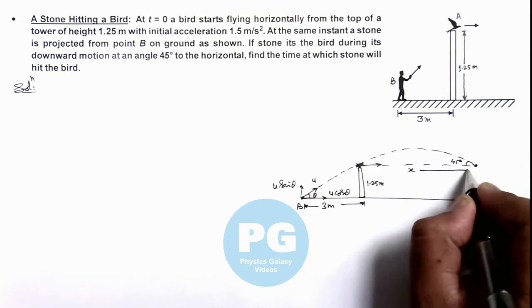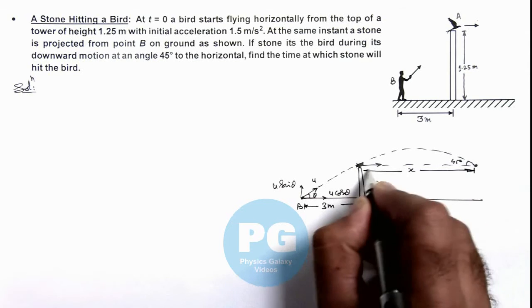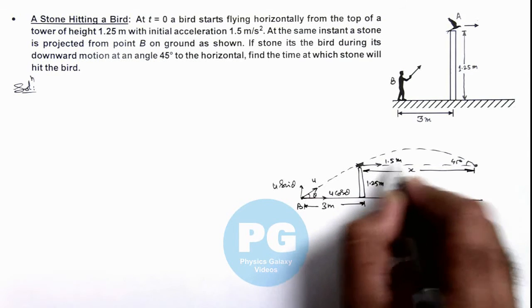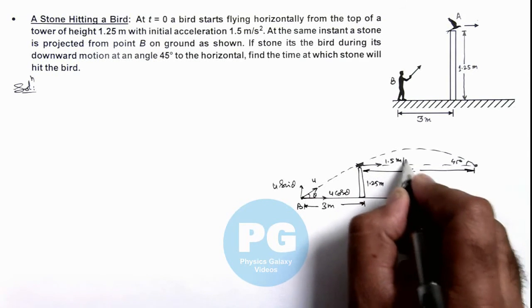In this situation, we can write if this distance is x which the bird travels, the bird is traveling at an acceleration 1.5 meter per second square.